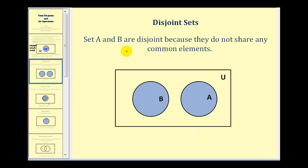Set A and B are disjoint if they do not share any common elements. So using a Venn diagram, set A and set B would not overlap.